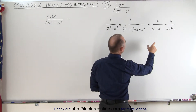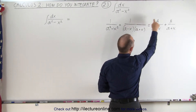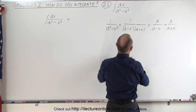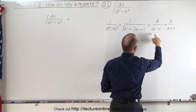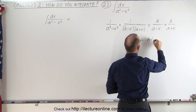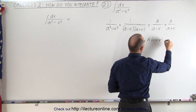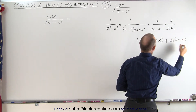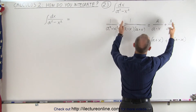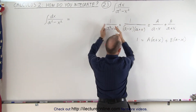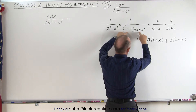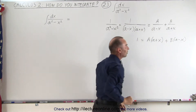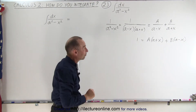What we can do is multiply both sides by (a minus x)(a plus x). On the left side we get 1, and on the right side, since (a minus x) cancels out in the first term, we get A times (a plus x), and since (a plus x) cancels out in the second term, we get B times (a minus x). So the right side becomes A(a plus x) plus B(a minus x), and we need to solve that for A and B.